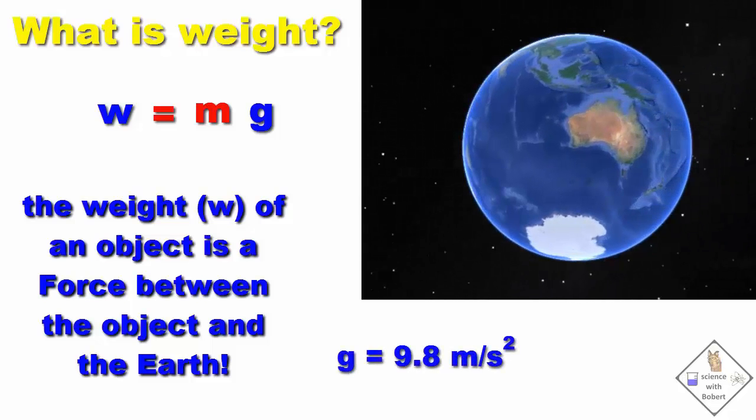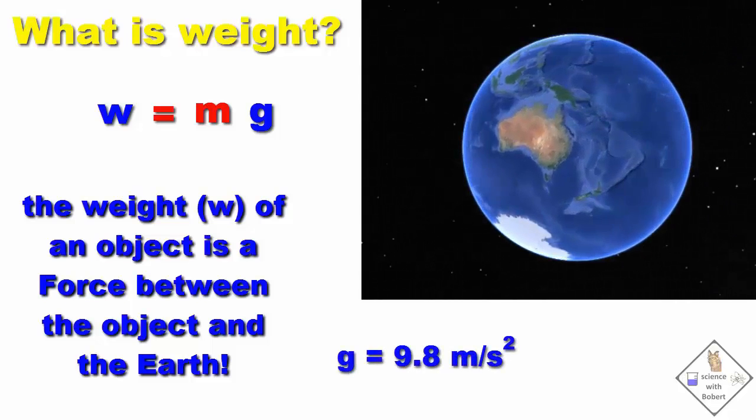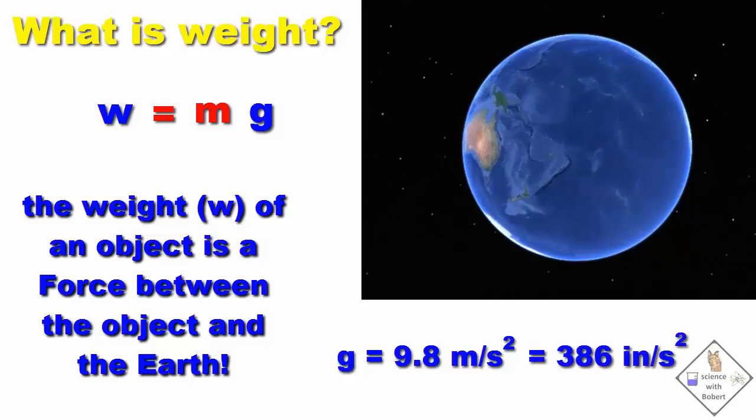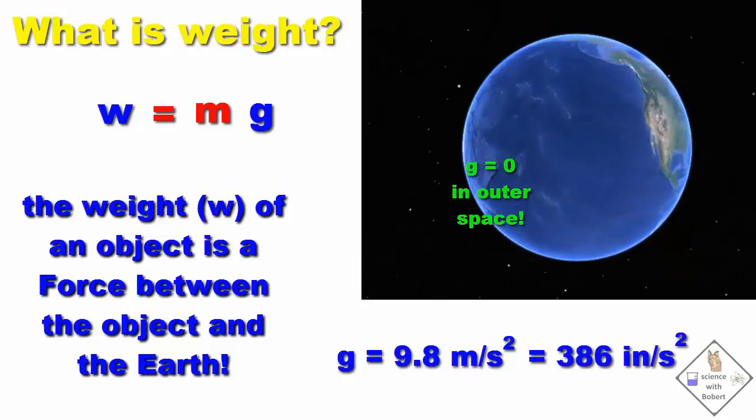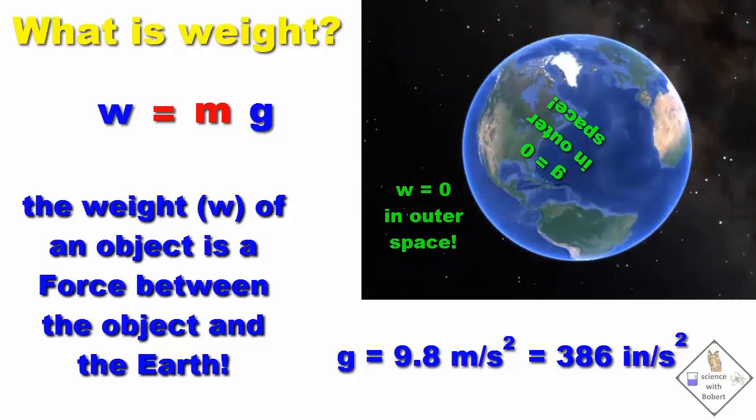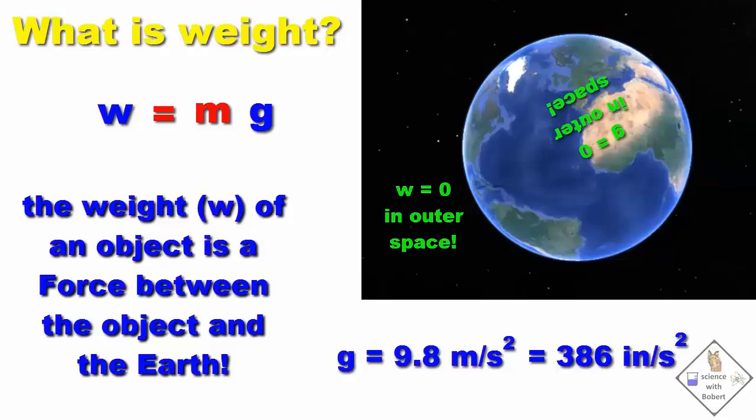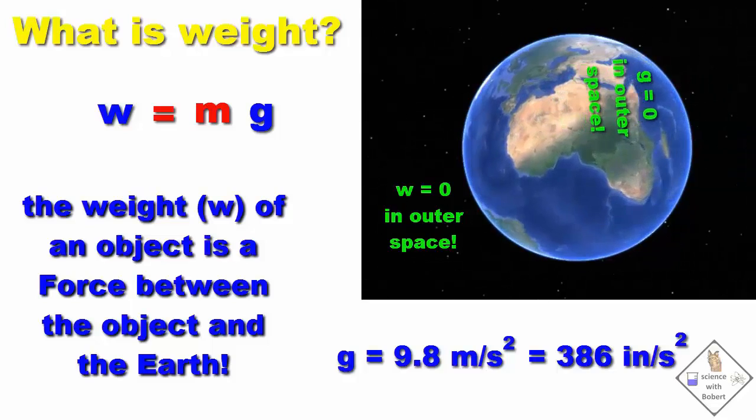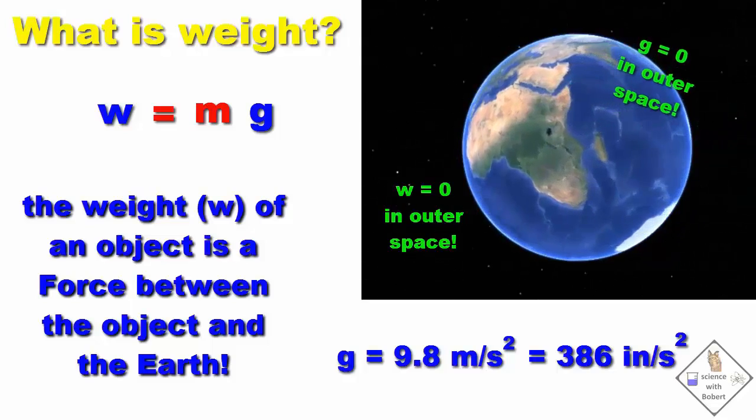On Earth, G is 9.8 meters per second squared or 386 inches per second squared. Astronauts in outer space are weightless because they are so far away from the Earth that G becomes zero. So their weight W is zero.